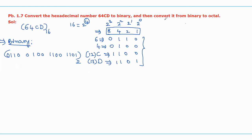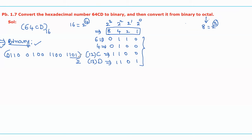Now, coming to the next part of the question: convert it from binary to octal. To convert this binary into octal, make all these binary bits into groups of three bits starting from the LSB, then write the equivalent octal digit. The base value of the octal number system is 8, and when we convert 8 in terms of power of 2, it becomes 2 power 3, where 3 represents the number of bits required to represent each octal digit from binary.